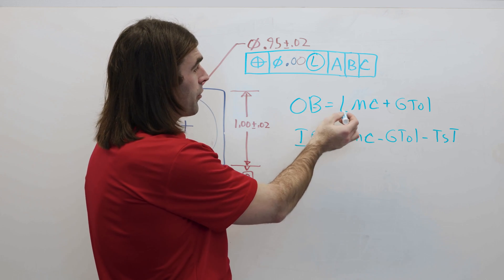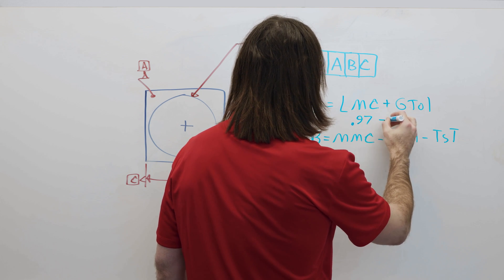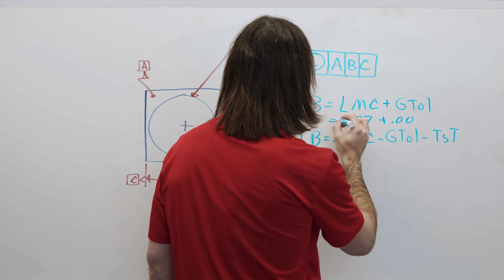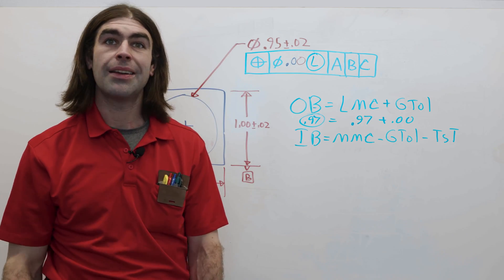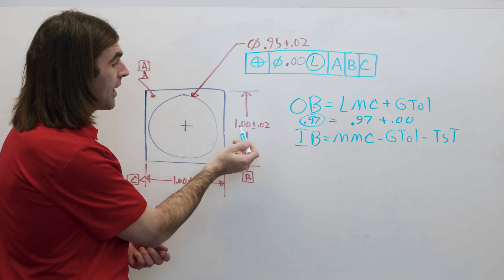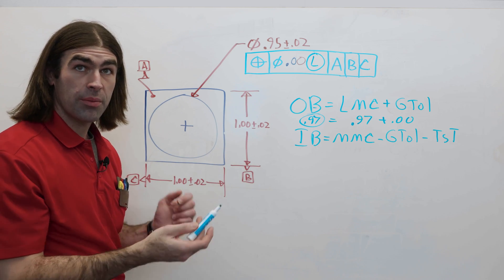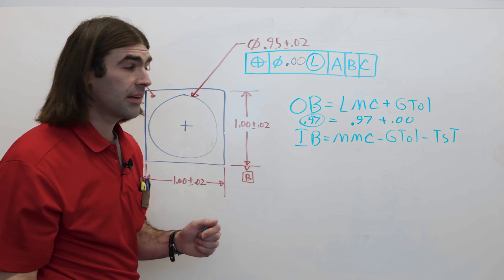So, the outer boundary is our largest hole size plus our geometric tolerance, which is 0.97, right? So, we can be sure that it's not going to be larger than the width of the feature. So, our wall thickness is protected.